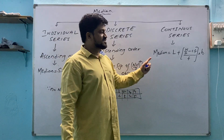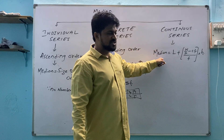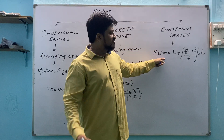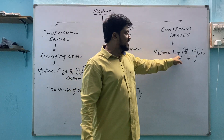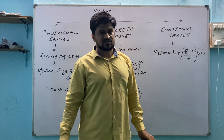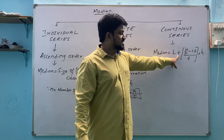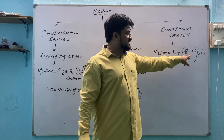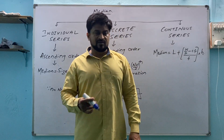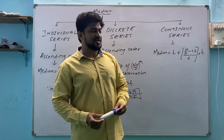For continuous series, the formula is: median equals L plus (N/2 minus cf) divided by small f, multiplied by h. Here L is the lower boundary of the median class, N is sigma f, cf is cumulative frequency, f is the frequency of the median class, and h is the class width. The details will become clear when we work through a problem.